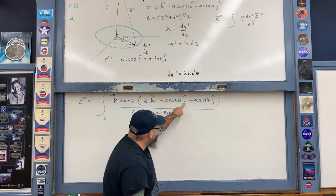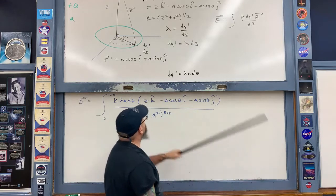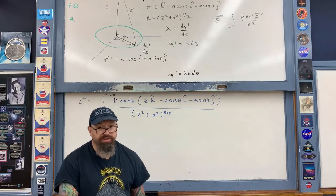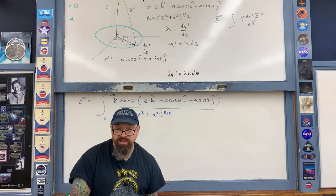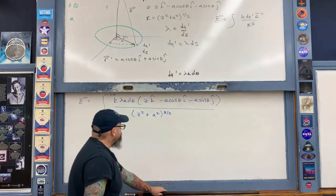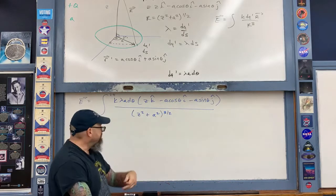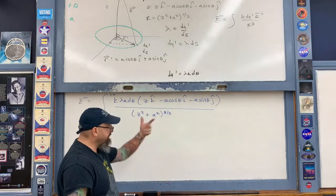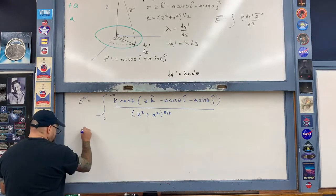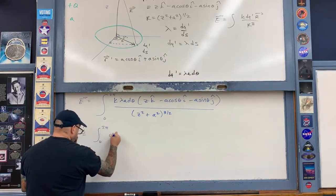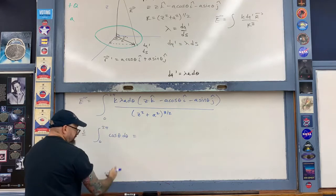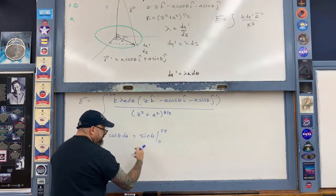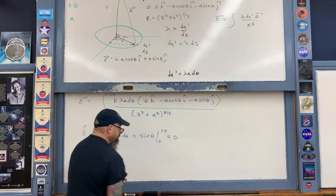Looking at the x and y components of the integral at point P, due to the symmetry of the ring we should find that both cancel out to zero. For the i-hat component, the only relevant integral is the integral from 0 to 2π of cosine theta d-theta — everything else is a constant. The integral of cosine is sine, evaluated from 0 to 2π: sine of 2π is 0 and sine of 0 is 0, so the i-hat integral equals zero.